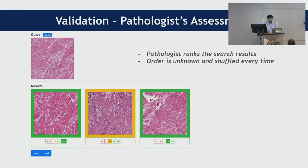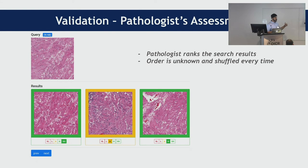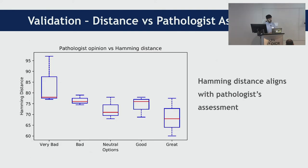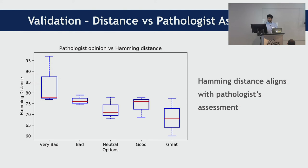The next validation we conducted was expert opinion — we asked a pathologist to rate our search results. We presented the pathologist with a webpage showing a query image and three results, sorted in some order. The pathologist marked which results were good or bad. What we wanted to find out is whether the pathologist's opinion correlates with our internal assessment — the distances calculated through the computer vision algorithm. What we found is that it does: whenever the pathologist said something was very bad, the distance used by our search engine was higher; whenever he said great, the distance was much lesser.